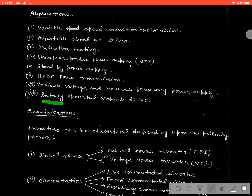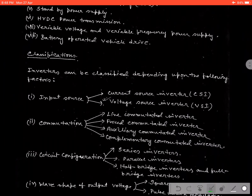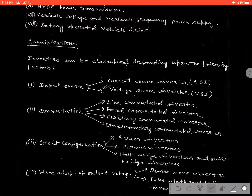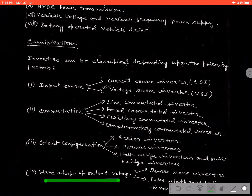Battery operated vehicle is a very important application nowadays because people are implementing the electric vehicle. And now for the classification, the inverter can be classified in several ways — depending on the input source, commutation circuit, circuit configuration, and on the output voltage waveforms.